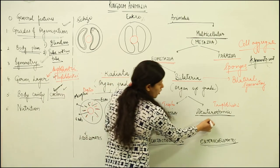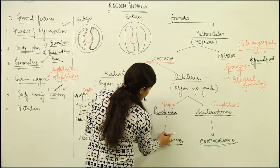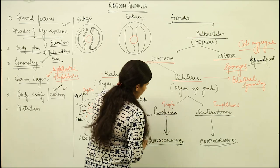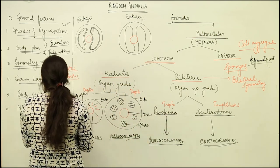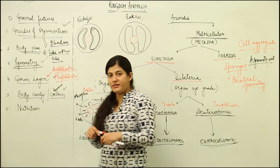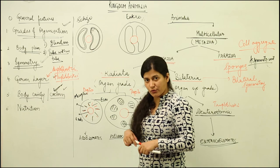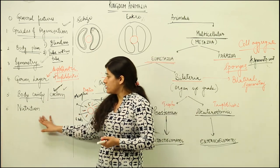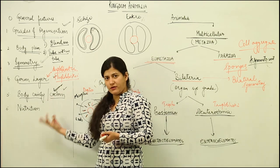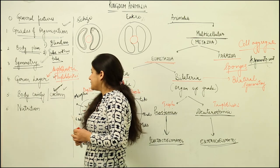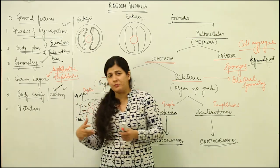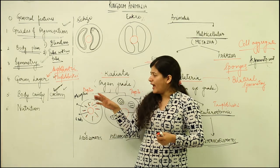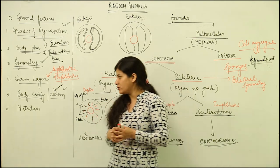The deuterostomes are enterocoelom-forming while the protostomes are schizocoelom-forming. Now we come to the nutrition because animals cannot form their own food. They would be heterotrophic in their nutrition. They could be parasitic; they are usually predators. They have to depend on some other food source.